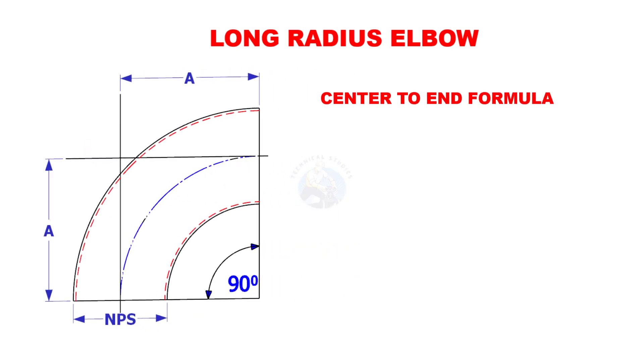Center to end formula. Assume that A is the center to end distance and NPS is the nominal pipe size.